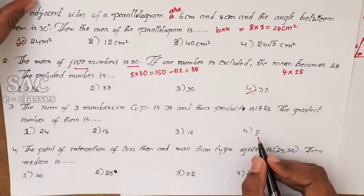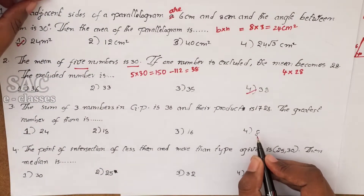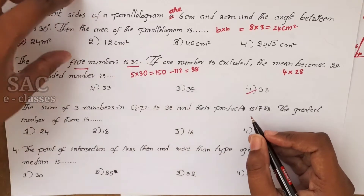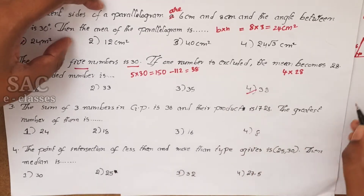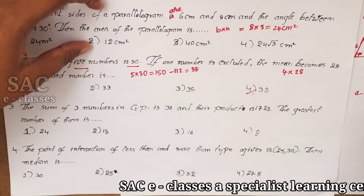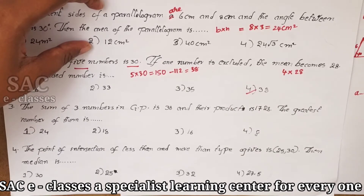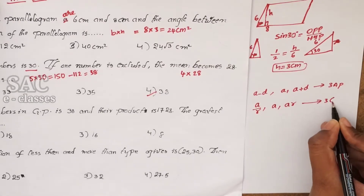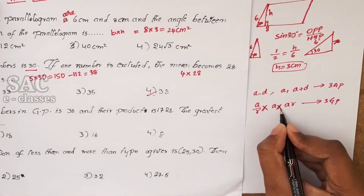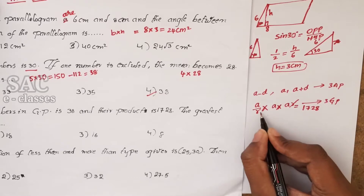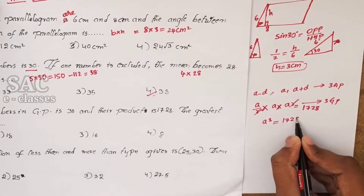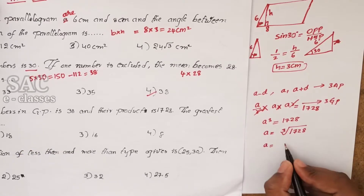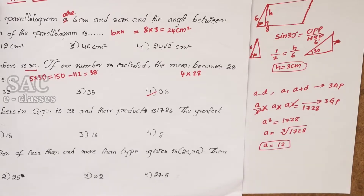Let's move to problem number 3. The sum of 3 numbers in a GP is 38 and their product is 1728. Find the greatest number. Whenever 3 numbers are in GP, we take them as A/R, A, and AR. Their product is A³ = 1728, so A = cube root of 1728 = 12.